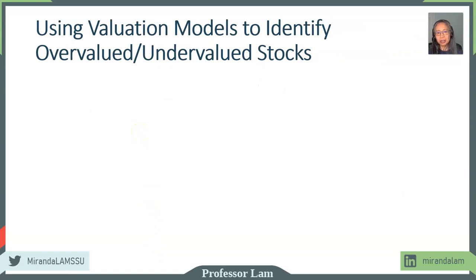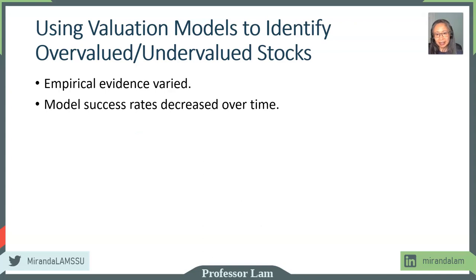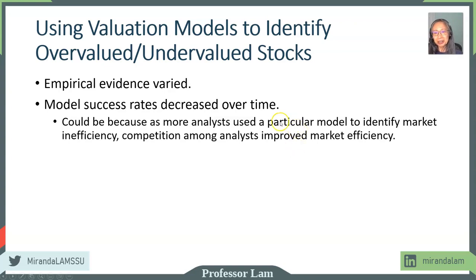So what can we draw as the final conclusion of all the valuation models that we have studied? Can we use them to identify overvalued or undervalued stocks? The empirical evidence that we have studied shows that it varies. The key finding overall is that the success rate decreases over time. What that means is, if a model becomes very popular and very successful, then more analysts will use that particular model. And if all the analysts are using the same model, they are competing against each other and the market becomes more efficient. So if you have a model that can identify market inefficiency, but everybody now uses that model, then the market price will react to analysts using this new popular model and becomes more efficient.